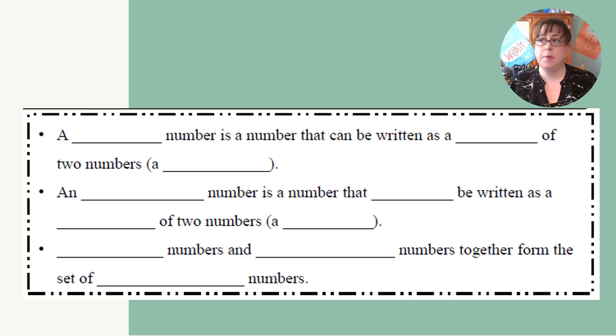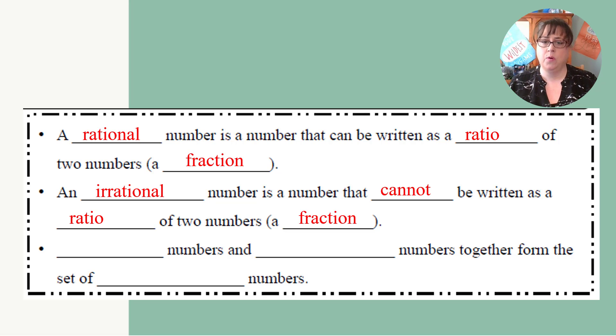Let's start with some definitions about rational numbers and irrational numbers. A rational number is a number that can be written as a ratio of two numbers, and remember a ratio is just a fraction. An irrational number is a number that cannot be written as a ratio of two numbers or a fraction. And together rational numbers and irrational numbers make our set of real numbers.